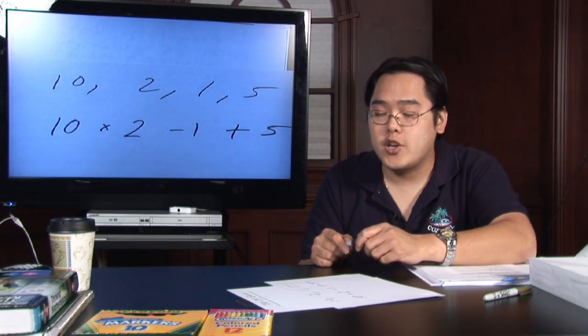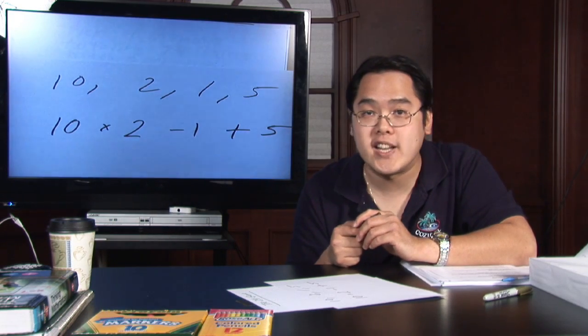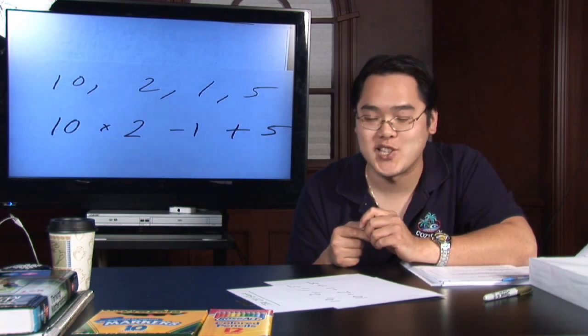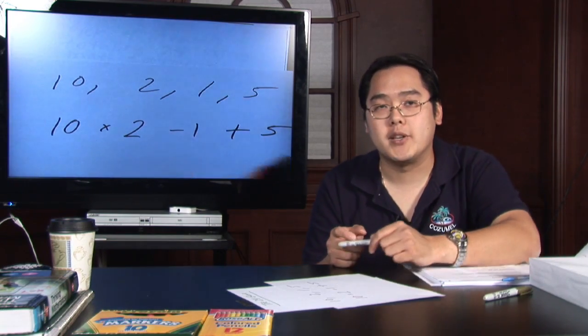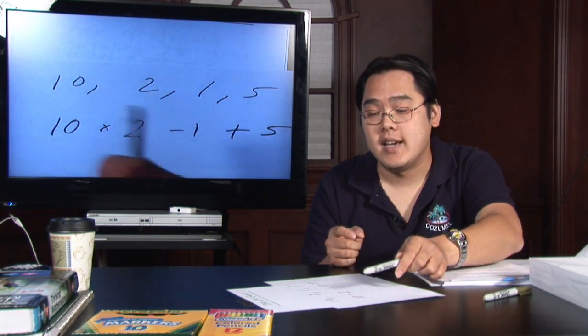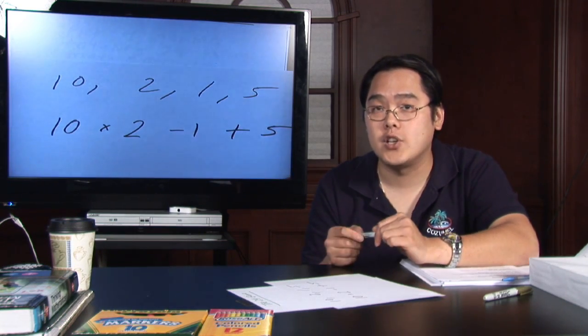Now if you work the operations, again keeping in mind your Dear Aunt Sally, the order of operations, you'll see that 10 times 2 is 20, 20 minus 1 is 19, and 19 plus 5 is going to give you 24.